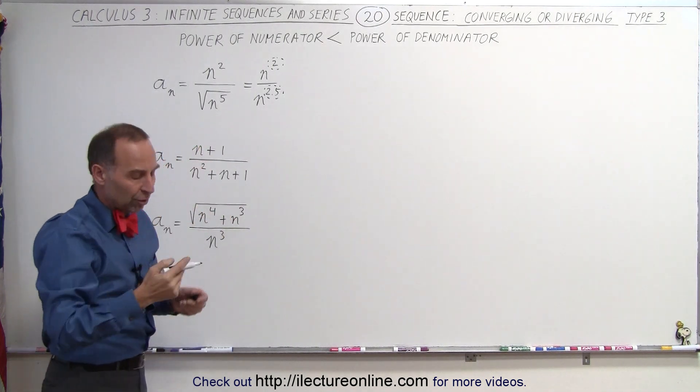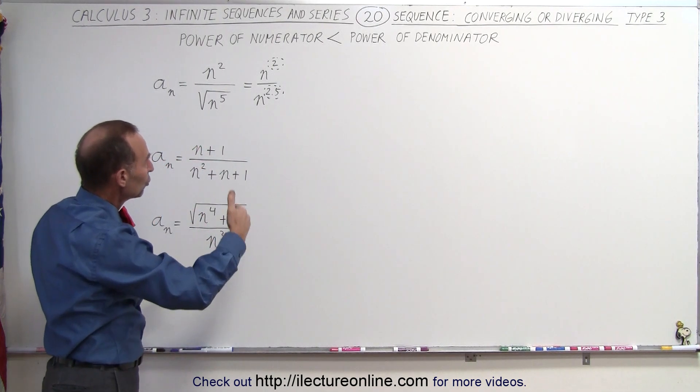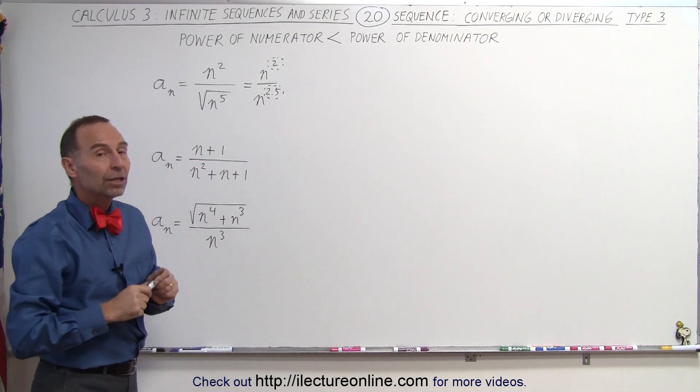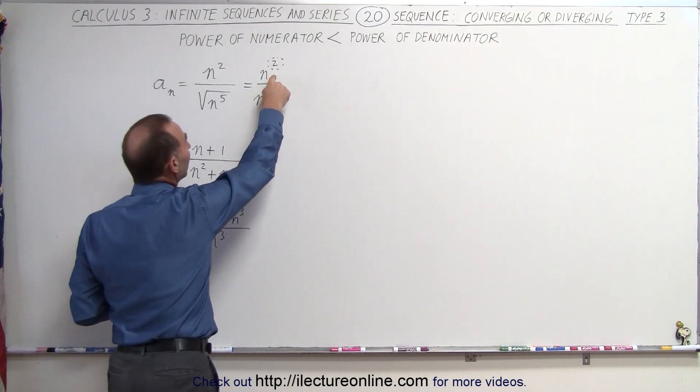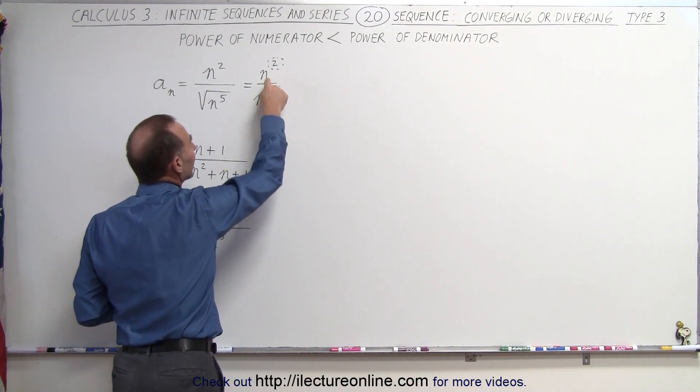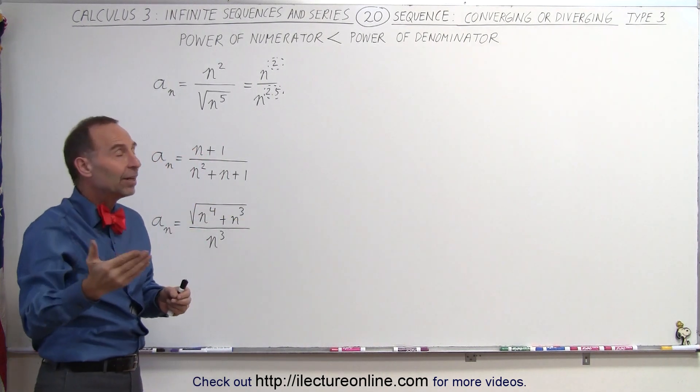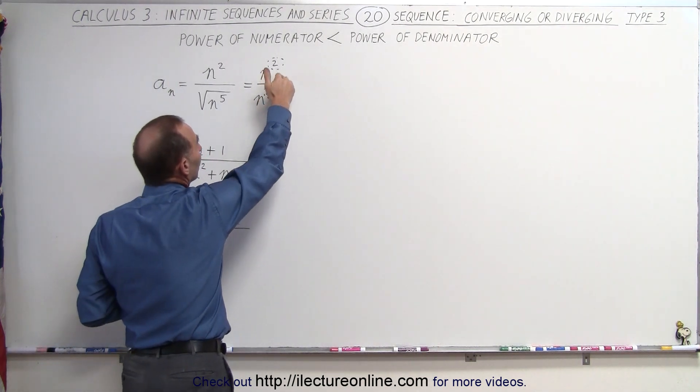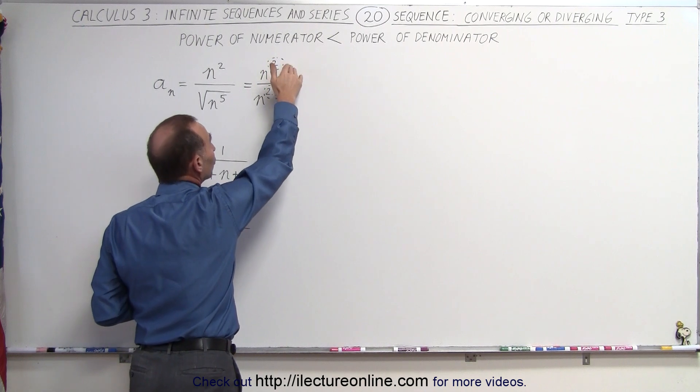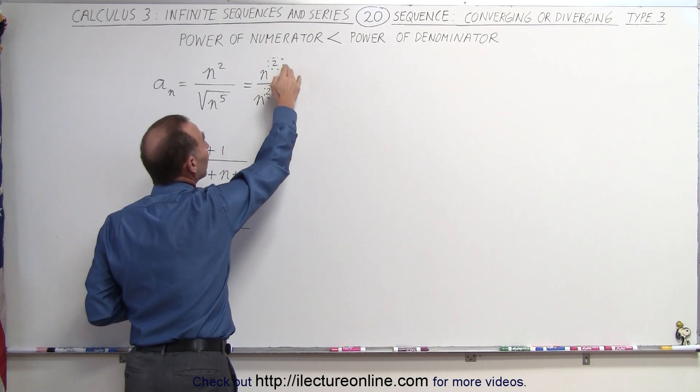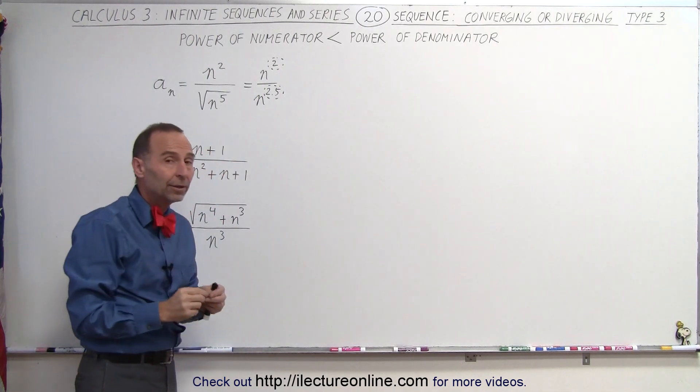So as n increases, as n becomes 1, 2, 3, 4, 5, you then notice that the numerator will grow more slowly than the denominator as n increases, and in the limit, as n goes to infinity, the number close to infinity squared is always going to be much smaller than the number close to infinity raised to the 2.5 power.